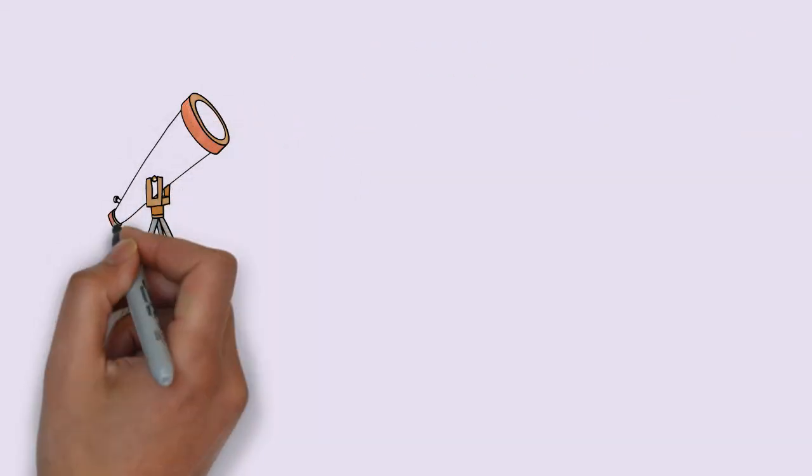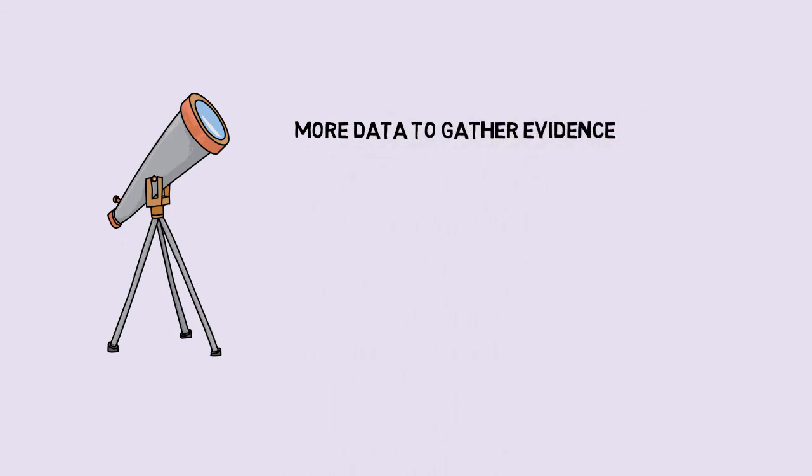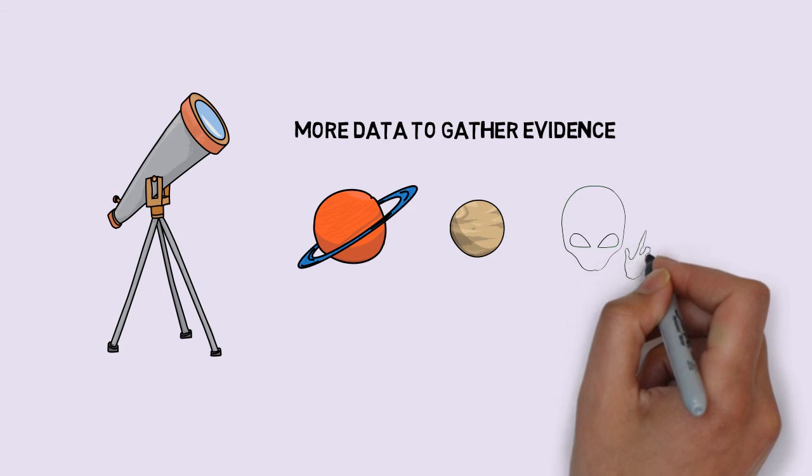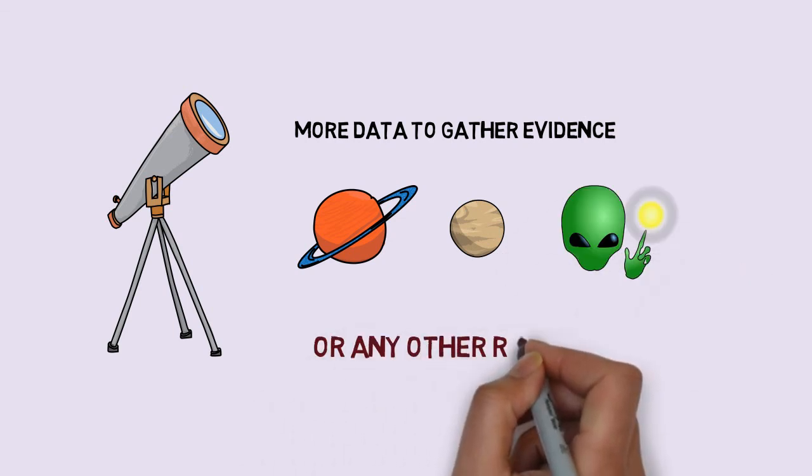And as of now, we don't know what's causing the star to dim. We need more data to gather evidence. It might be the comets, it might be the planets around the star, or it might even be advanced civilizations. Or is there any other reason?